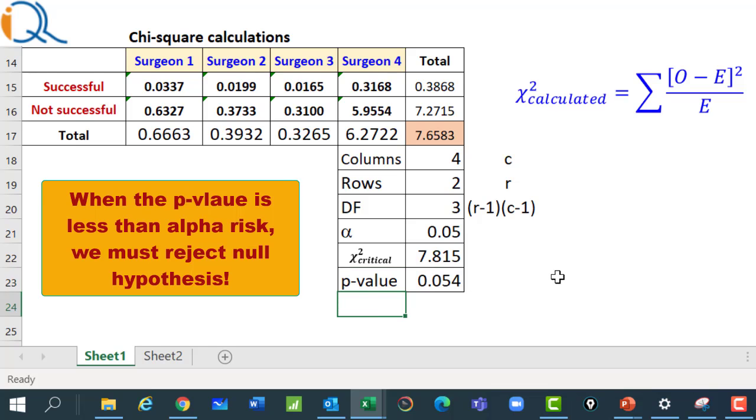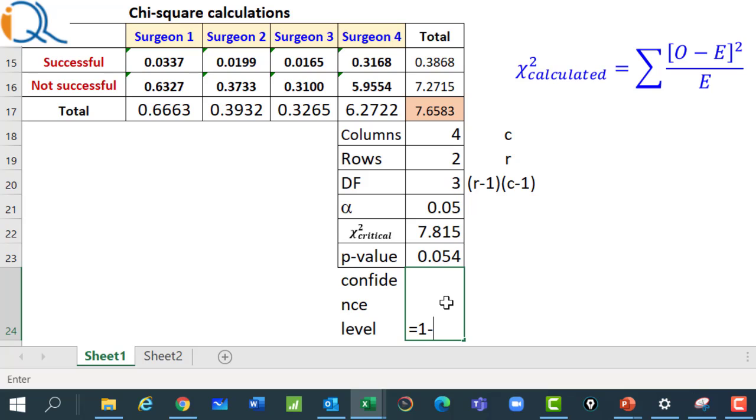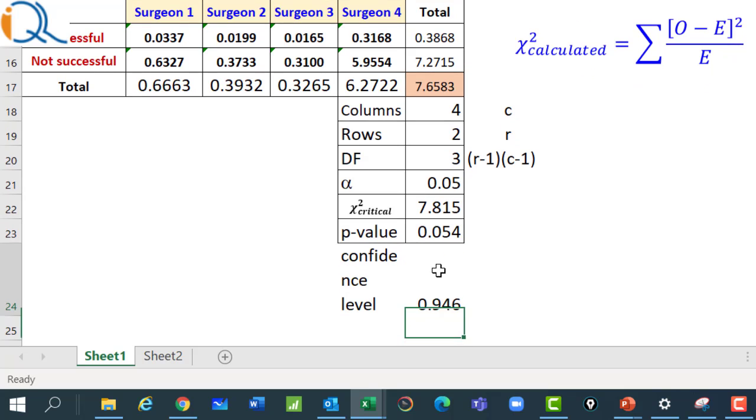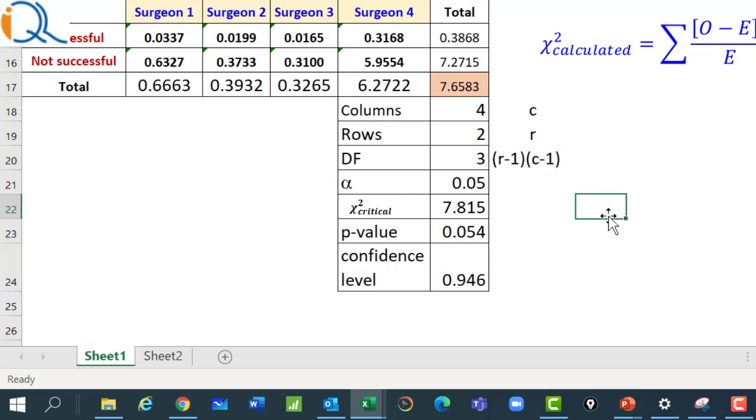So, if we want to reject null hypothesis, we will be able to reject this at confidence level. So, confidence level is given by 1 minus the p-value. So, 94.6. So, our confidence level falls just short of this value. I will just mark this. So, it is 94.6% confidence level at which we can reject it.